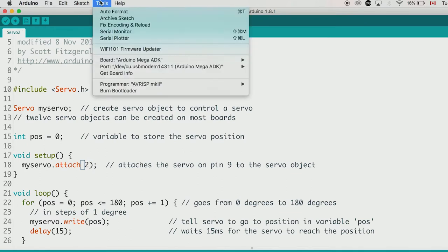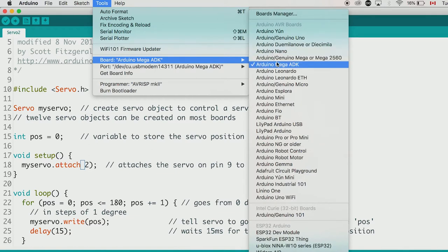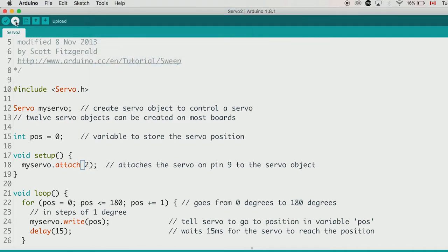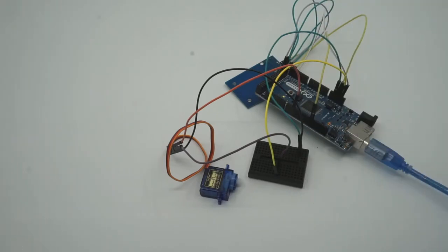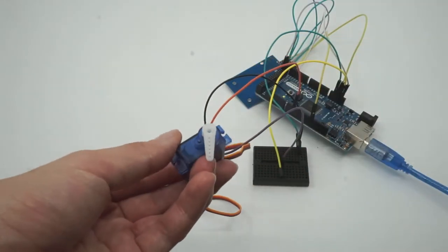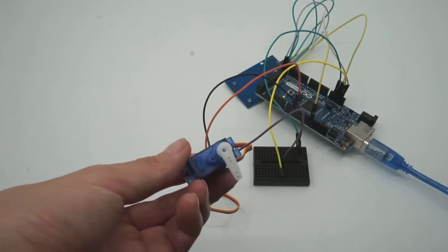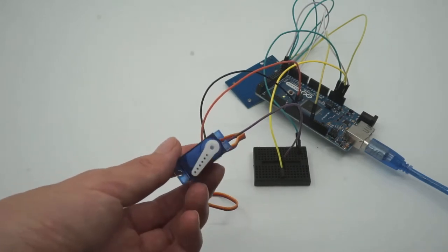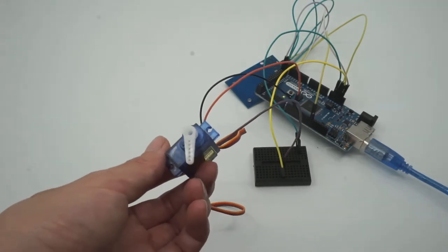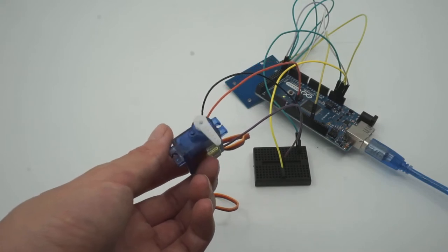And then tools, board, Arduino Mega ADK. And then port. And just upload the code. So you can hear it. Let's attach a little arm to it. Okay. See it is moving. That's basically the eyebrow motion. What we need to do is actually install this servo motor on the cardboard robot. And then we can calibrate the angles and how the eyebrow is going to move.